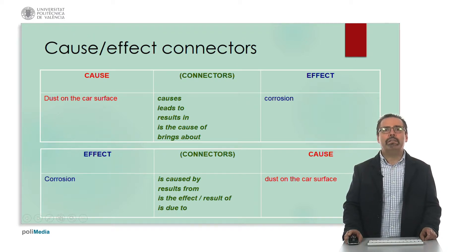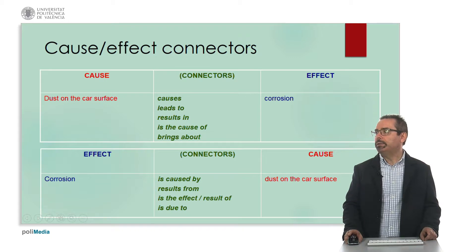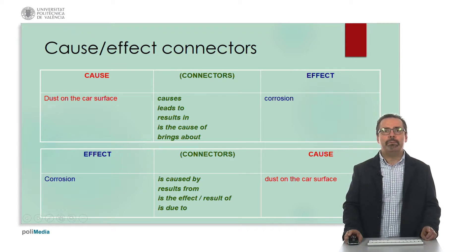On the other hand, if we place the effect at the beginning of the sentence, we can use other connectors: is caused by, results from, is the effect or result of, or is due to. For example: corrosion is caused by dust on the car surface. The meaning is exactly the same and we can use all these connectors. The important thing is to know the relationship between the cause and the effect and to place it correctly in the sentence.